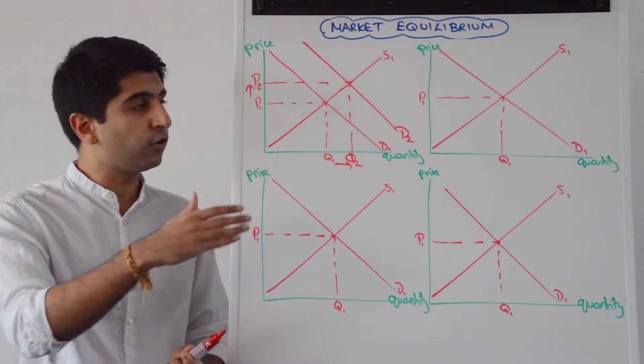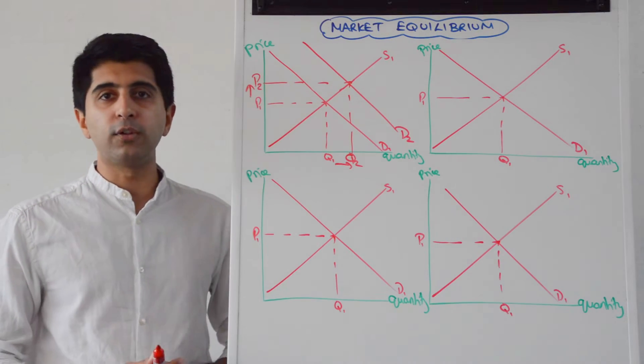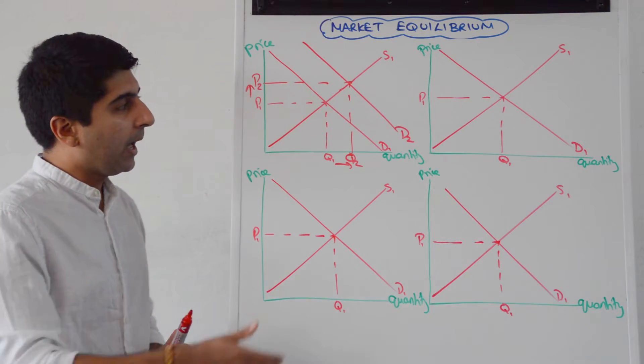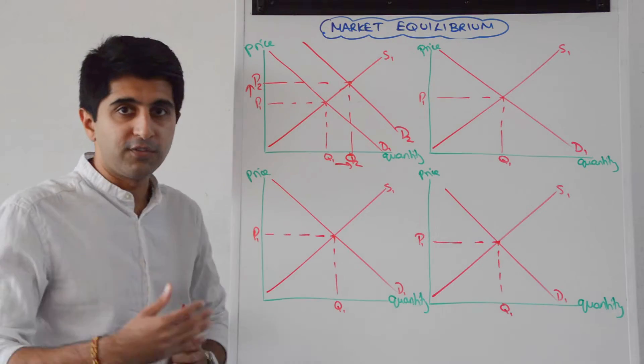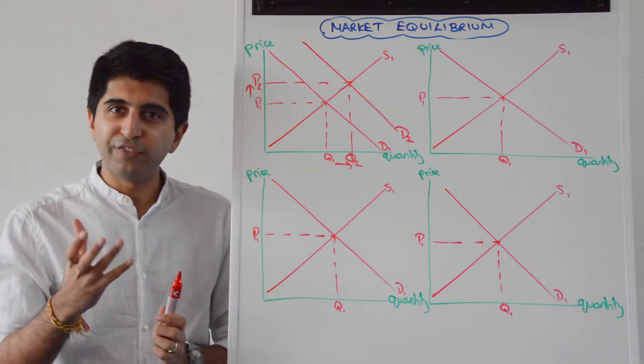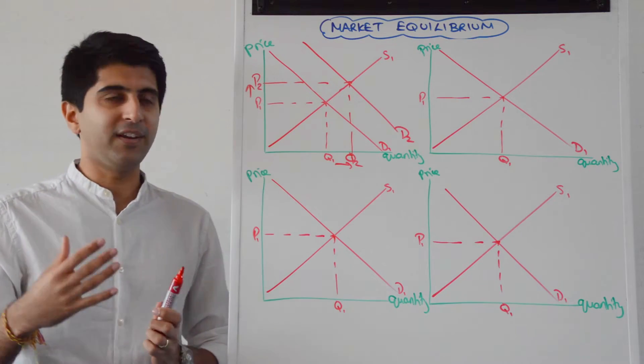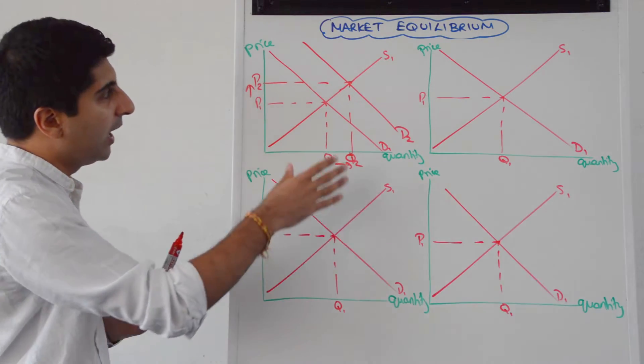Maybe it's a reduction in interest rates if this good requires borrowing money in order to purchase it potentially. And maybe it's a reduction in the price of a complementary good. All of these reasons can shift demand to the right. So your confidence with specific factors that can affect demand is important as well. So simple there.